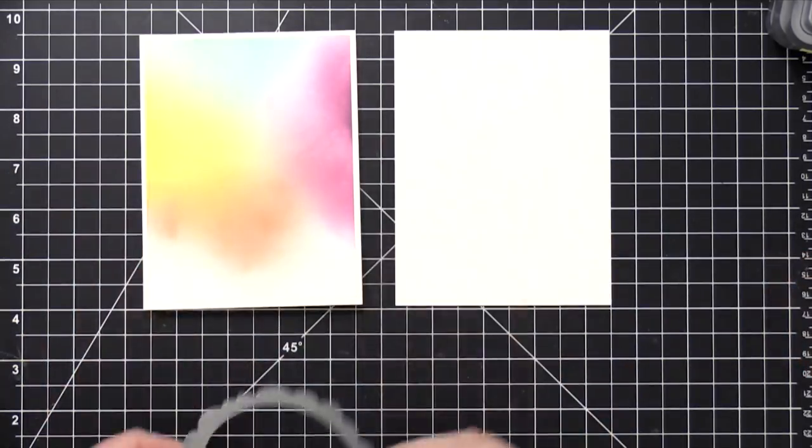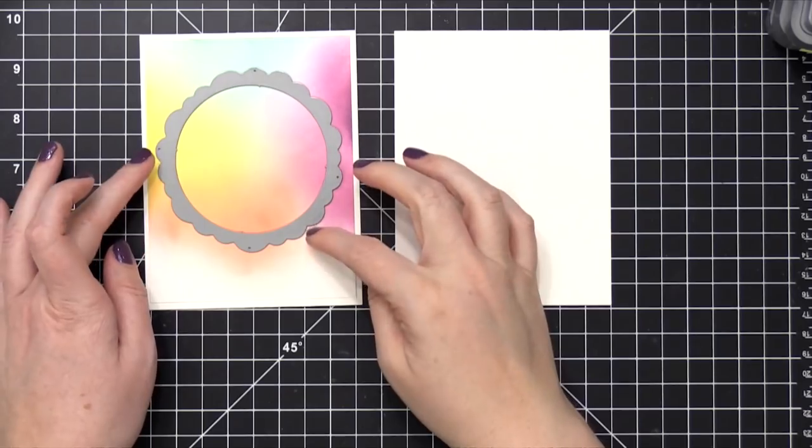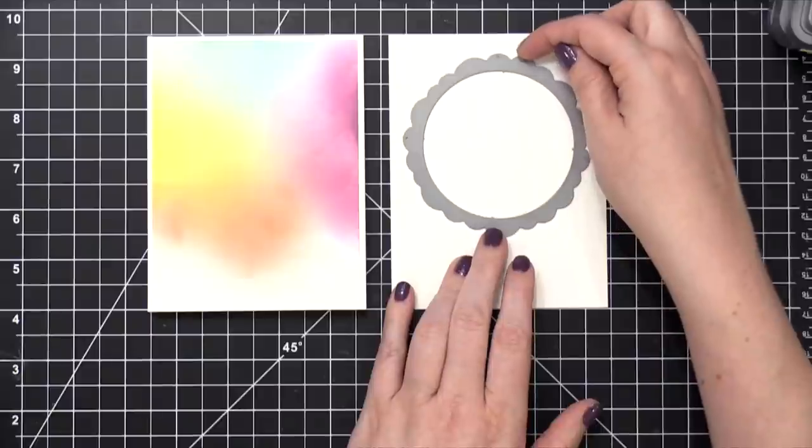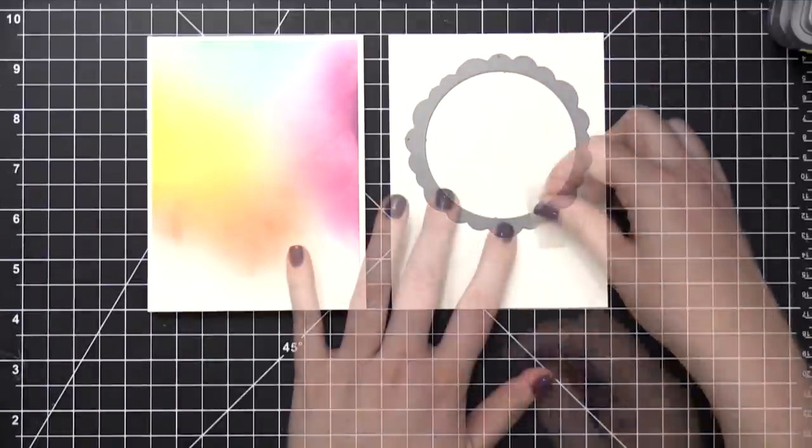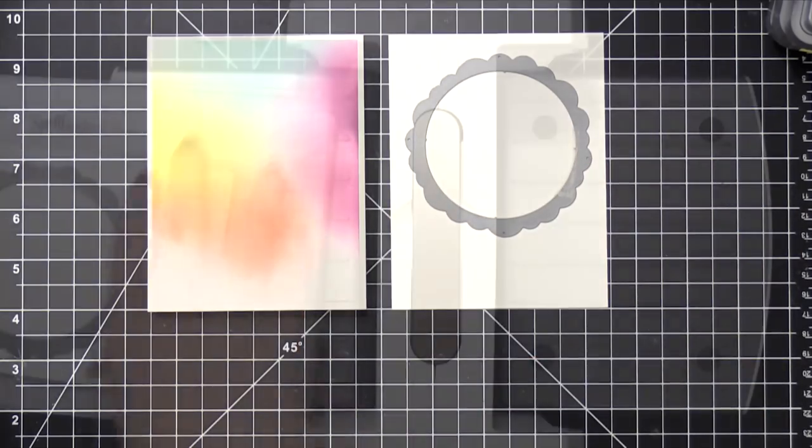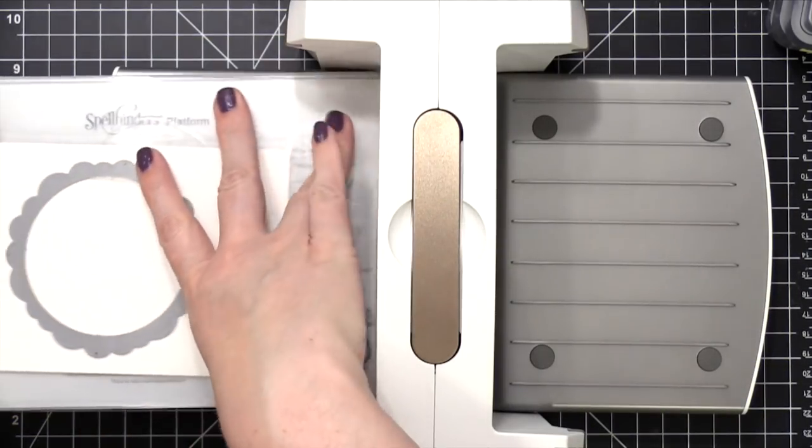So that part is done now, and now I'm gonna figure out where I want this die. So this die is actually a set, I think of like five or six different circles, and they're like scalloped, they're like zigzag-edged circles, and this is the Flaunters die set.